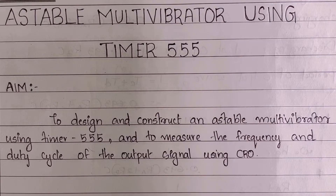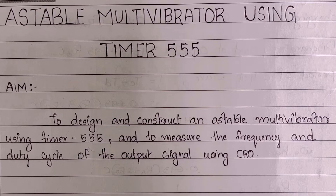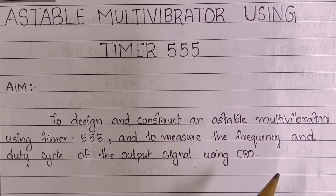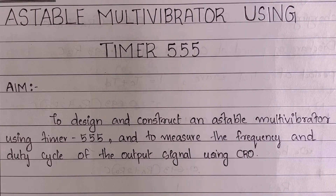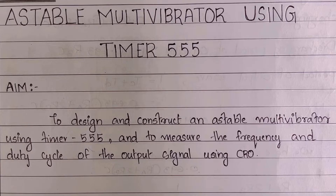Hello everyone. Today we will be doing an astable multivibrator using Timer IC 555. In the previous video we used IC 741, which is an op-amp, to construct an astable multivibrator. The aim of the experiment is to design and construct an astable multivibrator using Timer IC 555 and to measure the frequency and duty cycle of the output signal using CRO. We will generate two types of waves: rectangular wave and square wave using Timer IC 555.